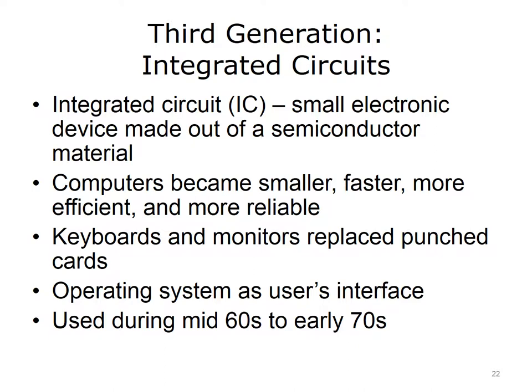Keyboards and monitors replaced punched cards and printouts, and users interacted with third-generation computers through an operating system, which allowed the computer to run many different applications simultaneously. For the first time, computers became accessible to a mass audience. Third-generation computers spanned the time period between the mid-1960s and the early 1970s.